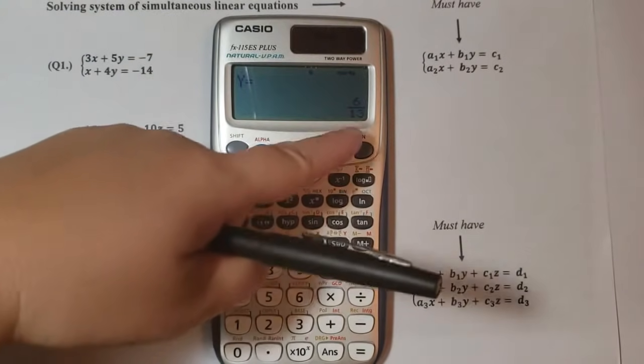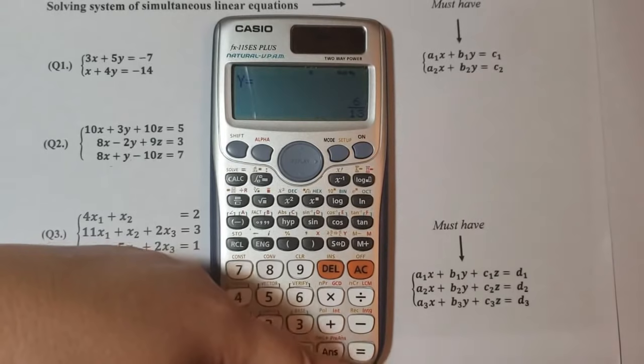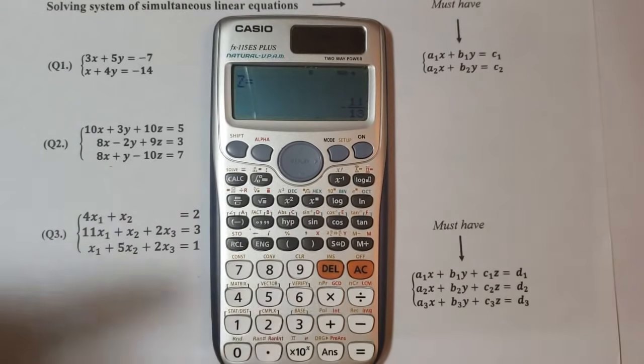So it is 6 over 13, pardon me. And z, minus 11 over 13. That's it.